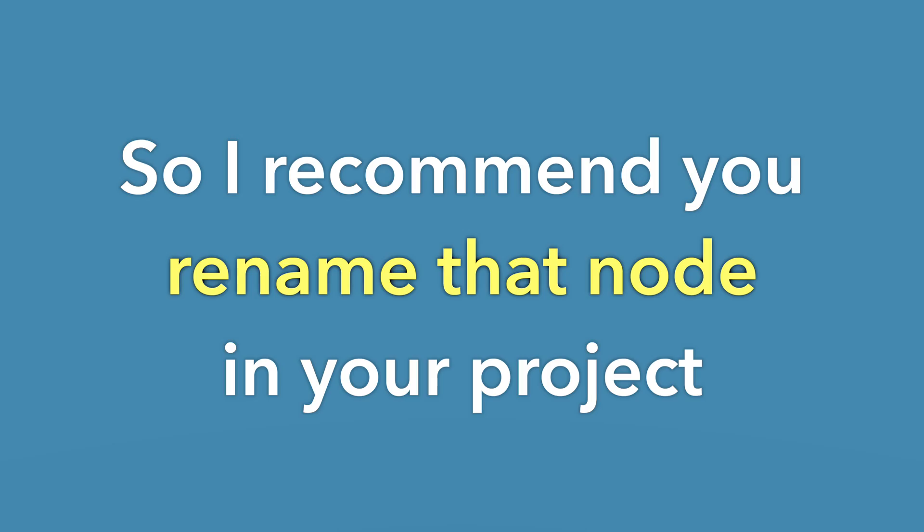I recommend that you rename that node in your project. So if I'm doing cleaning in the auxiliary file, I rename node X as 'node X cleaned.' When it gets merged in, it's treated as a different node, and I have a clean version. I can then archive or delete the unclean version of the node.